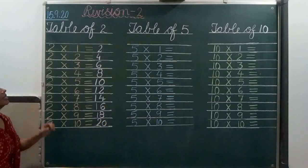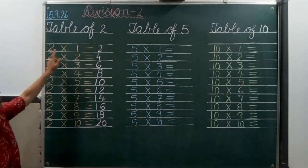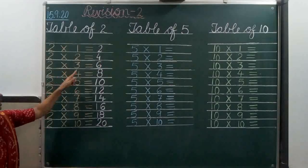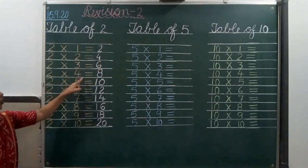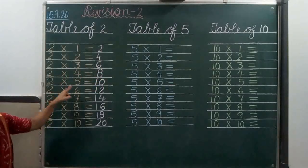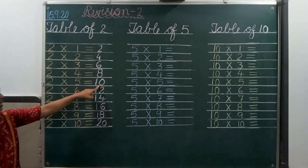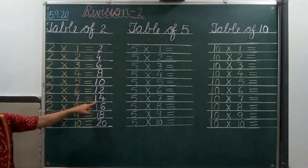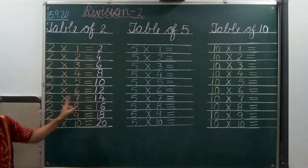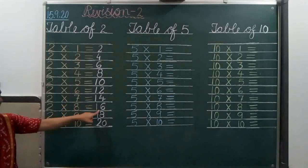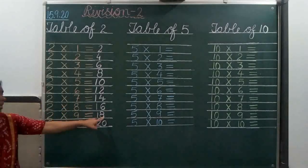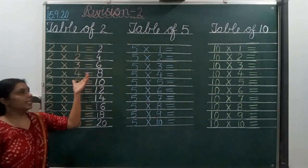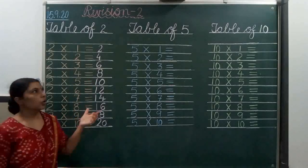Let's revise the table of 2. 2 1's are 2, 2 3's are 6, 2 4's are 8, 2 5's are 10, 2 6's are 12, 2 7's are 14, 2 8's are 16, 2 9's are 18, 2 10's are 20. This is the table of 2.